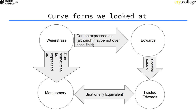Edwards curves themselves are a special case of twisted Edwards curves. Edwards curves are twisted Edwards curves with the parameter A set to 1. Twisted Edwards curves are birationally equivalent to Montgomery curves.